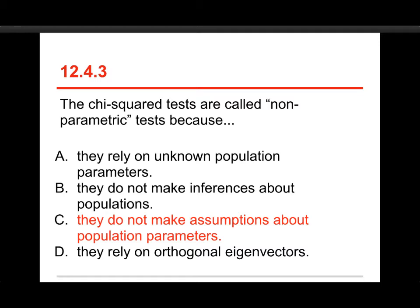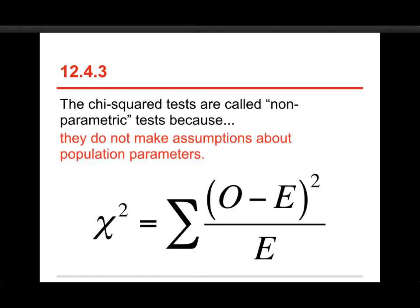And D, orthogonal eigenvectors, I'm kind of messing with you there. That actually is a statistical term that comes from principal components or factor analysis, but I'm just throwing you off with that one. It's assumptions about population parameters. And again, if you look at the formula, you don't see mu or sigma or anything like that. You just have observed frequencies and expected frequencies, and so you don't have these assumptions about the populations.